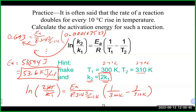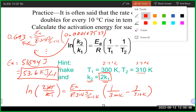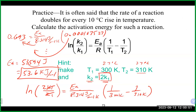With the two-point Arrhenius equation, you can solve for activation energy, one of the temperatures, or one of the rate constants — essentially anything in the equation except R, which is a constant. Most errors come from the math: improper rearrangement or incorrect order of operations when solving for k₂, T₁, or other variables.